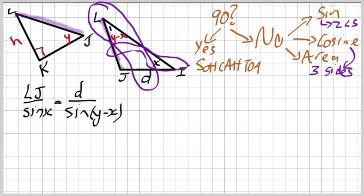In this case, I've got two angles. I've got the x and I've got the y minus x. Therefore, I knew that I was going to work in the sine rule, as well as there's no 90 degrees there.